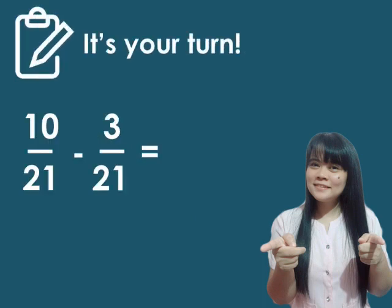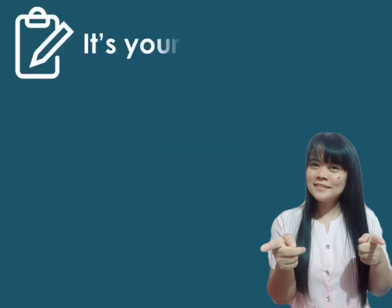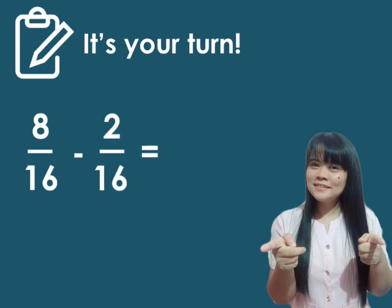What would be the answer? 10 over 21 minus 3 over 21. Your answer? That's right. It's 7 over 21. Since 7 over 21 can be simplified, the answer will be 1 over 3.